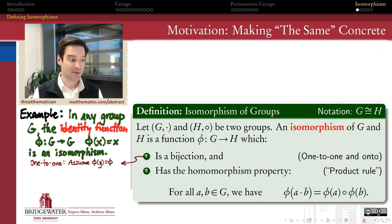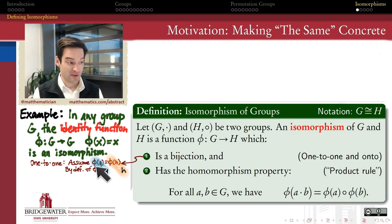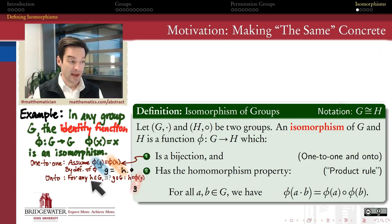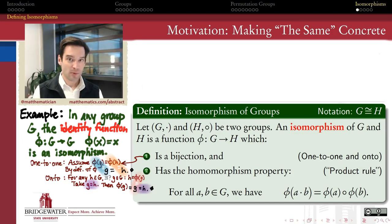Let's go through the proof. First, why is Φ a one-to-one correspondence? It's one-to-one because if Φ(g) = Φ(h), by definition of Φ, Φ(g) equals g and Φ(h) equals h, so when Φ sends g and h to the same element, the original elements must have been the same. It's onto because given any element h in group G, I just take g equal to h, and the identity function carries it to g, which equals h. So the identity function is both one-to-one and onto.